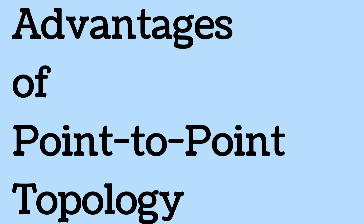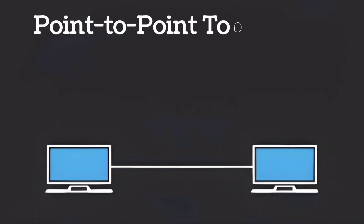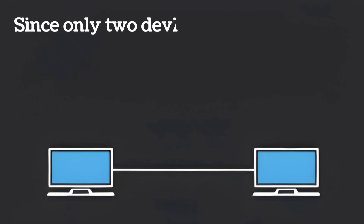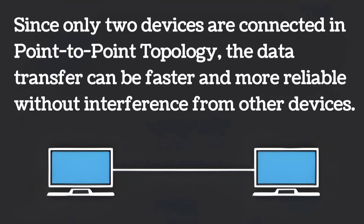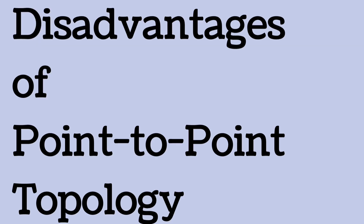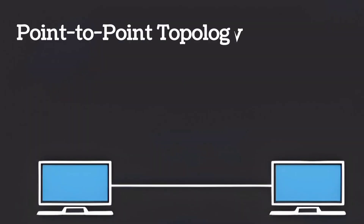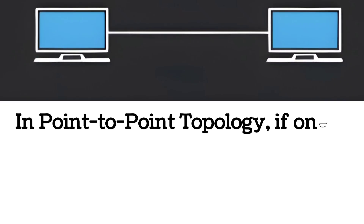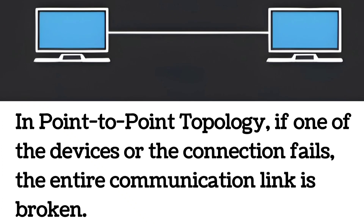Advantages of point-to-point topology: it is easy to set up because only two devices are connected, requires less cabling and hardware making it cheaper, and data transfer can be faster and more reliable without interference from other devices. If something goes wrong, it's simple to find and fix. Disadvantages: it only works for two devices and is not suitable for larger networks; if one device or connection fails, the entire communication link is broken.